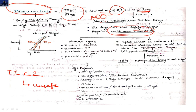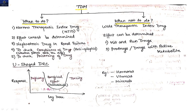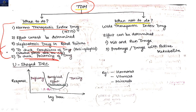Drugs that need therapeutic drug monitoring include: digoxin, anti-epileptics, aminoglycosides, theophylline, lithium, anti-cancer drugs, tricyclic antidepressants (TCAs), cyclosporine, and methotrexate. Indications for therapeutic drug monitoring include: narrow therapeutic index, inability to determine effect clinically, nephrotoxic drugs given to renal failure patients, checking compliance, and checking for drug poisoning.